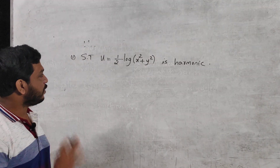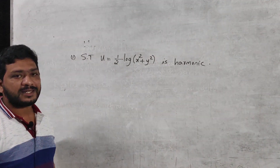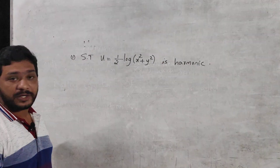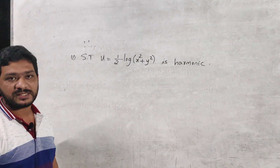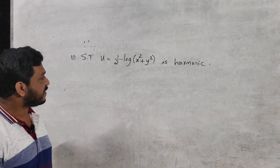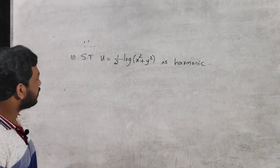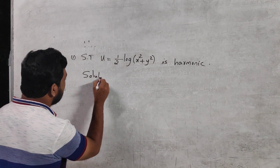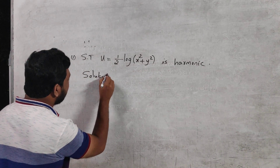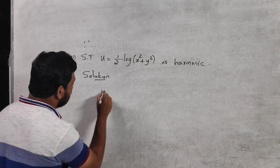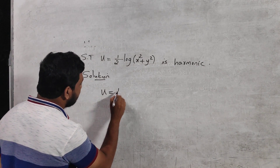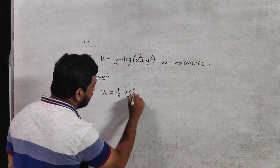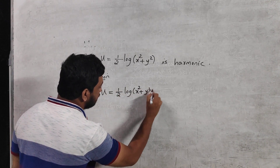To show that u is harmonic, we verify the Laplace equation: ∂²u/∂x² + ∂²u/∂y² = 0. Given that u = ½ ln(x² + y²), let us write the solution.